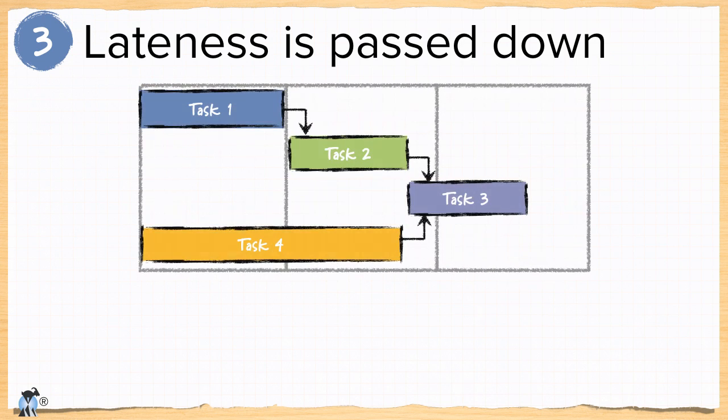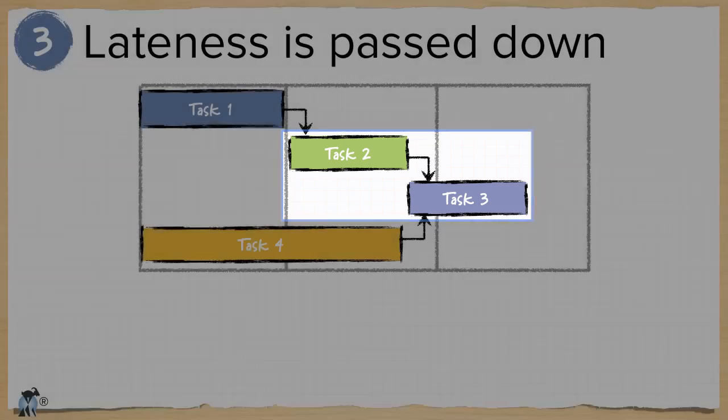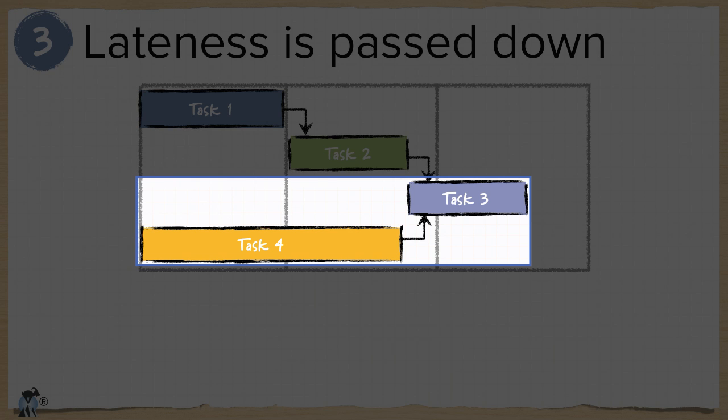Consider this very simple Gantt chart. We have four tasks. Task 3 is dependent on task 2, which is itself dependent on task 1. Task 3 is also dependent on task 4.